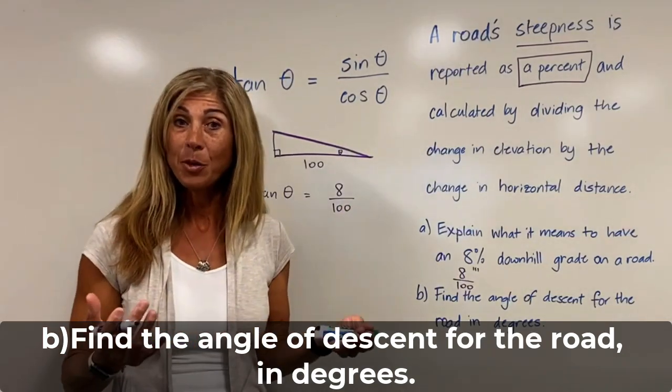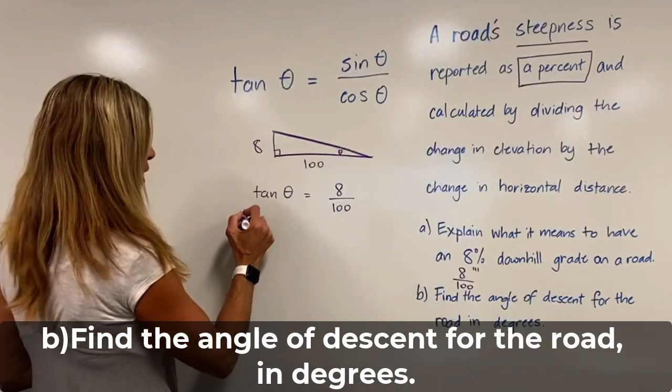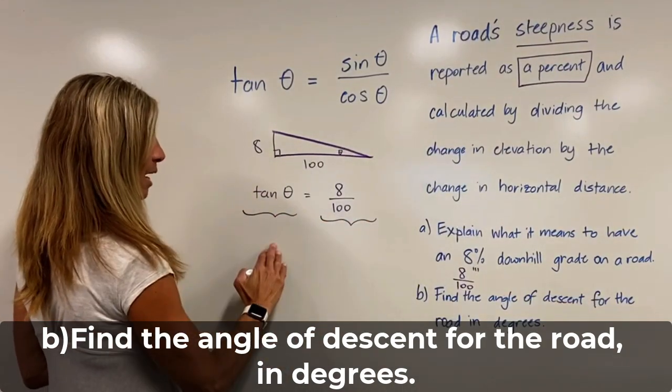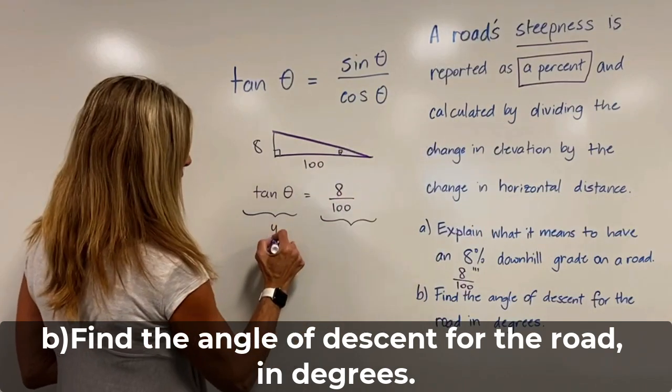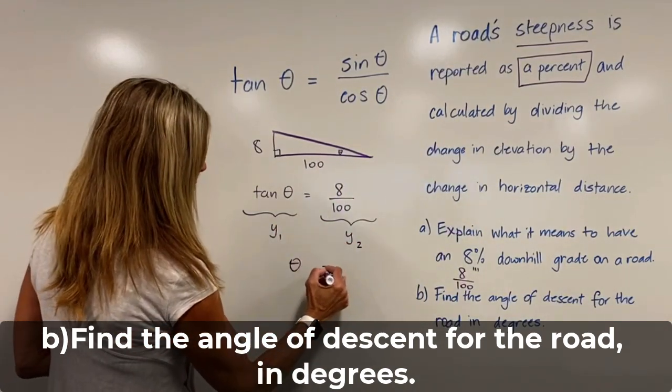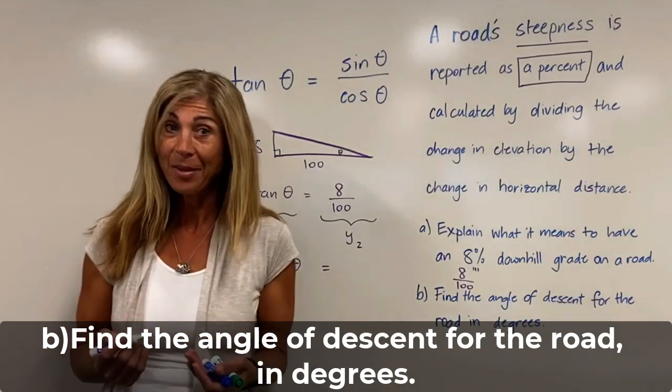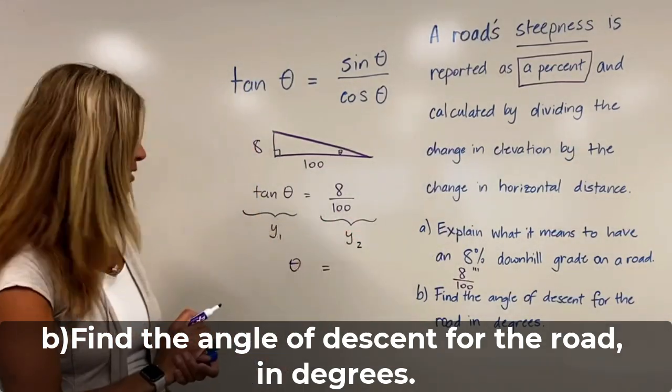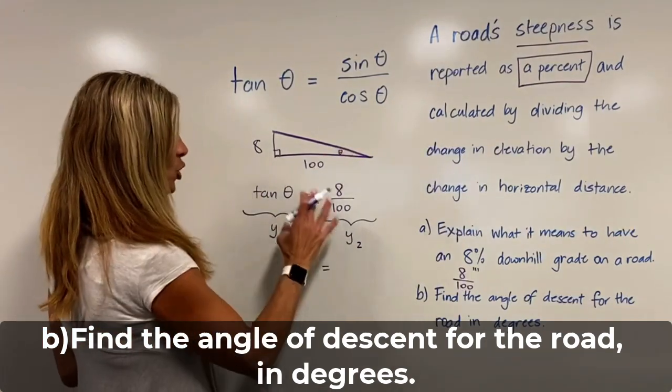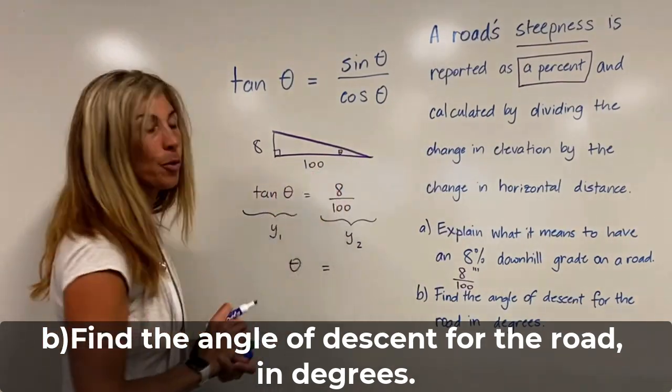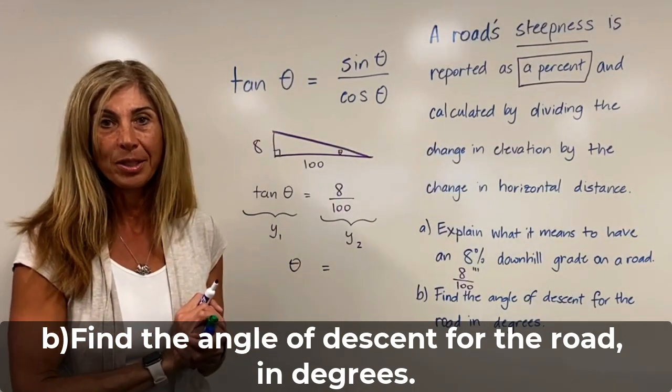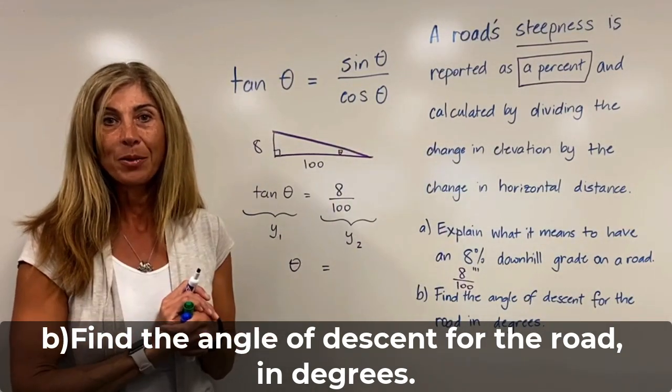We know using Desmos or a calculator we can figure out what that angle is. We can put this in our y1, this in our y2, and find what the value of theta is. Eventually, we will do the inverse of this function so that we can actually determine what theta is by inverting tangent of eight over 100. Let's see what that value is.